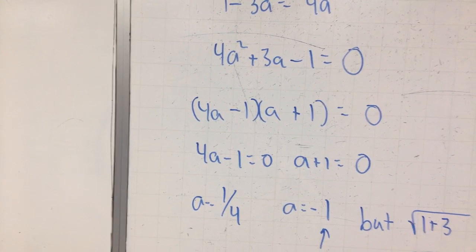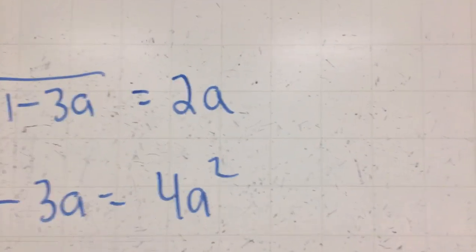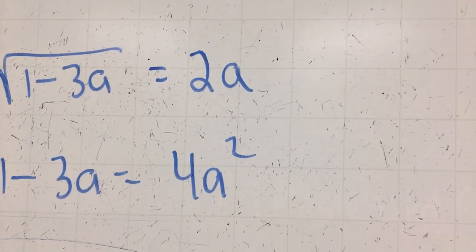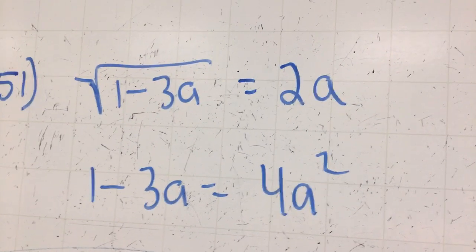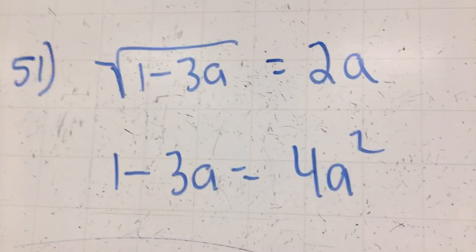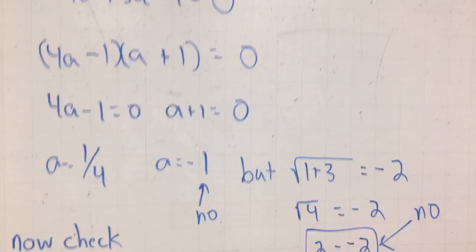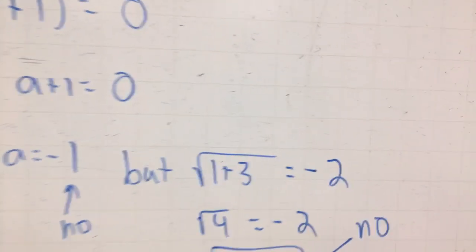If you look at that negative 1, if you multiply 2 times negative 1, you get negative 2. Well, the square root of anything is not going to work if you get a contradiction. So, let's see what we get here. If you plug the negative 1 in there, you get this. The square root of 1 plus 3, because remember, negative 1 times negative 3 is positive.